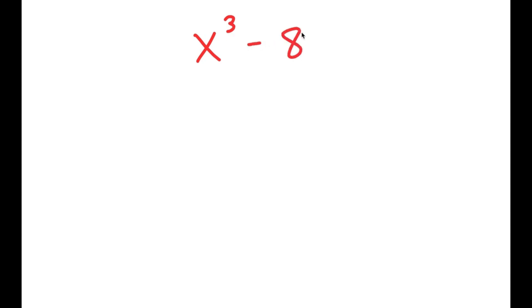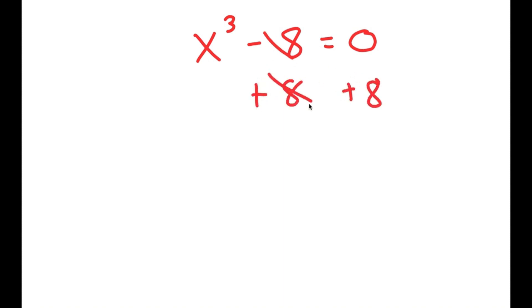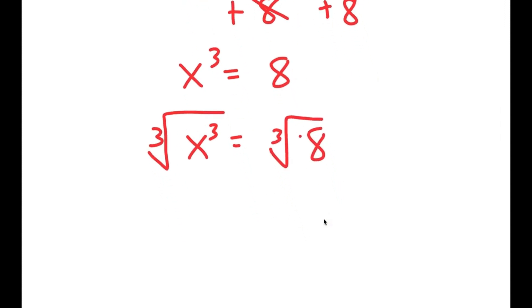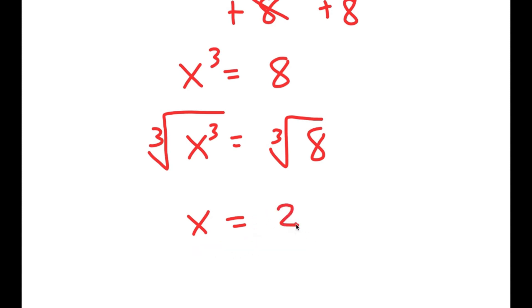In this video, I'm going to solve the equation x³ - 8 = 0. So how most people solve this equation is they add 8 on both sides to get x³ = 8, and then they take the cube root on both sides. The cube root of x³ is x, and the cube root of 8 is 2. So then they get x = 2, which is a solution to this equation.